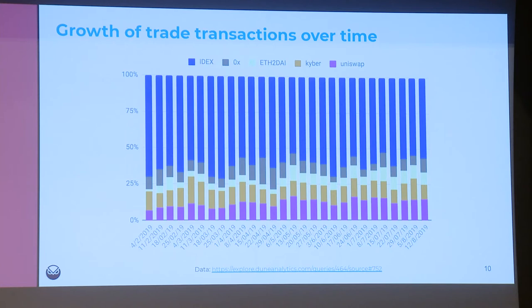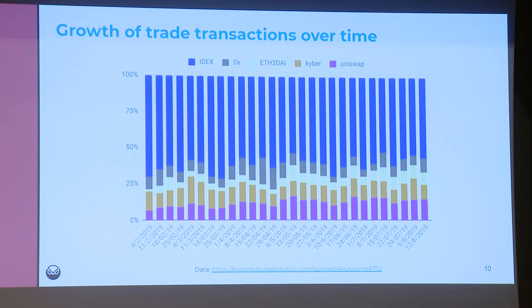The next chart shows how these figures changed over time, from February to today. This data was collected with Dune Analytics — a really cool tool. It shows that EtherDelta and Uniswap really gained some market share, which is pretty exciting. But overall there is no dominant tendency that either permissioned or permissionless will clearly gain more market share in the future.